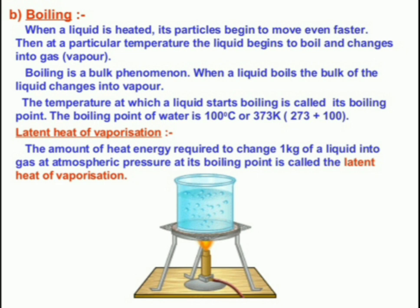The temperature required to change liquid to boiling or vapor is called the boiling point — in chemistry, abbreviated as BP (not blood pressure!). The boiling point of water is 100 degrees Celsius or 373 Kelvin. We get 373 by adding 273 plus 100. So in SI units the boiling point of water is 373 Kelvin, and commonly we say 100 degrees Celsius.